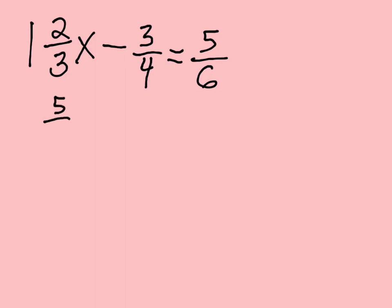So let's take a look at another one. And how about if we have 1 and 2/3 X minus 3/4 equals 5/6. So again, this would be a difficult problem to do if we just left it as fractions, but we're going to make it improper first. So 3 times 1 is 3 plus 2 is 5. So this becomes 5/3 X minus 3/4 equals 5/6.